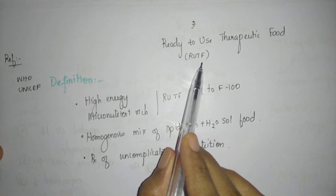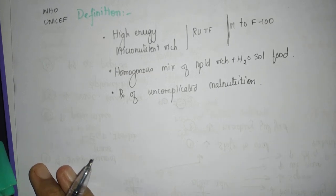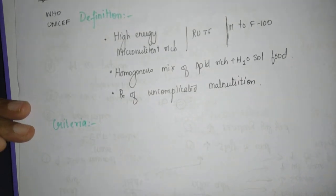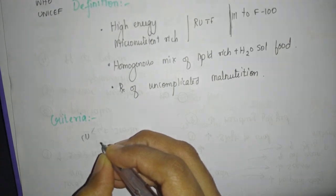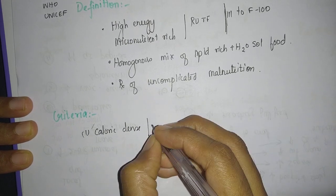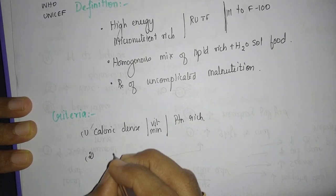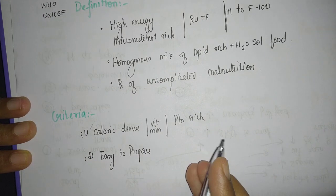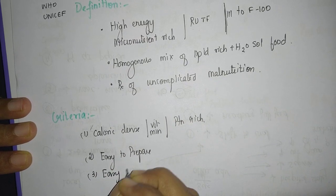Instead of F-100, this can be given. What are the characteristics or criteria by which you define RUTF? It should be a calorie-dense food, vitamin-mineral rich, protein-rich. It should be easy to prepare with almost no preparation or cooking, hence the name. It should be easy to give to the child.